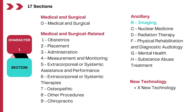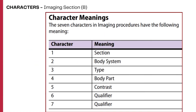Remember, multiple codes can be reported from different sections of the PCS based on the combinations of procedures that are usually performed. The first character in the imaging section is B for the section itself, and the second character defines the body system.